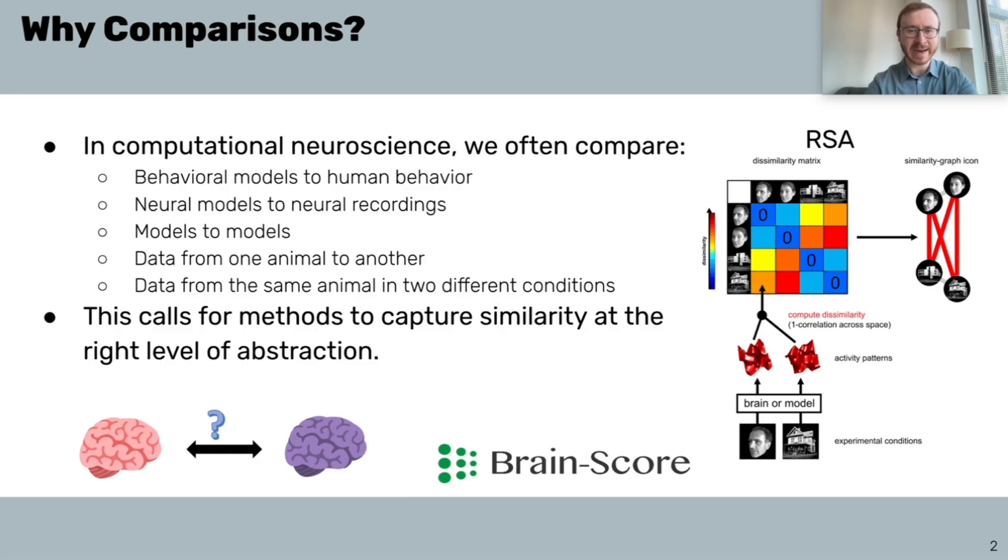So as we've seen, comparison is everywhere in computational neuroscience. We do all sorts of comparisons between models and data, data and data, or even models and models. And the prominence of comparison motivates an important question. How should we compare these systems? When our networks are fundamentally changing in time, a geometric comparison method might not cut it.